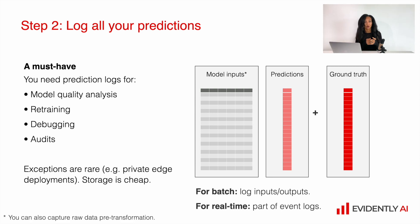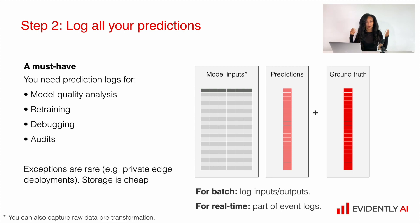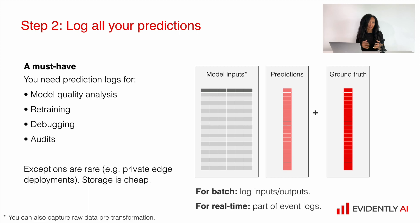When you have all your service logs, you need to make sure that your prediction logs are recorded correctly. When you log a predict event, you should include all related information: what was the model input, what was the model's output, and if you do have data related to feedback or ground truth, it makes sense to log that as well. This is very useful for model quality monitoring, retraining, debugging, and audits.